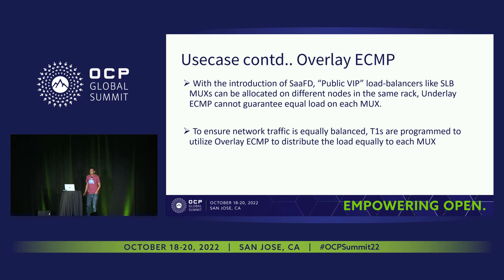To solve that problem, we use overlay ECMP. Using overlay ECMP, we directly have a tunnel between a T1 router — the leaf router — and the load balancer sitting under the Tor, and the route does load balancing across those tunnel endpoints. For example, if we have two load balancers under one Tor and another under a different Tor, traditional underlay ECMP sends 50% to one Tor with the remaining 50% split between two load balancers. With overlay ECMP, we can load balance equally across all three endpoints.